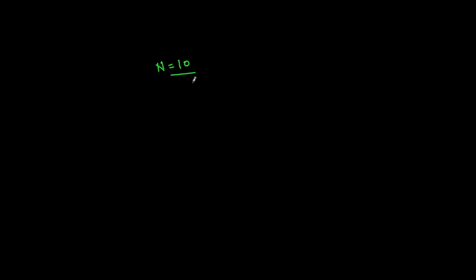Let's go to the blackboard and see how we can solve this. For example, let's say the number given is 10. The binary representation of 10 is 1010, using place values 1, 2, 4, 8. So there are two set bits and our answer would be 2.